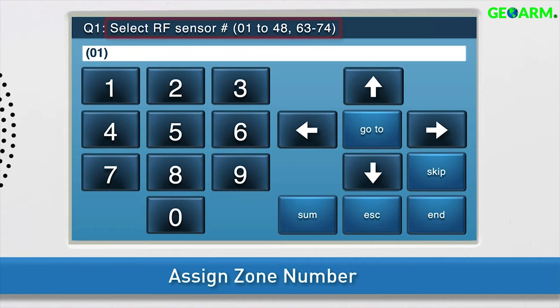By default, we're already on the correct sub-question to select the zone number. The white field is called the answer box.